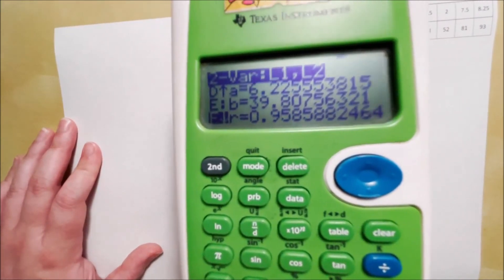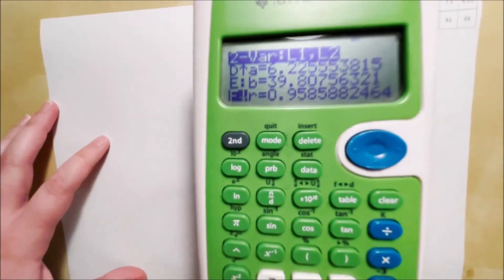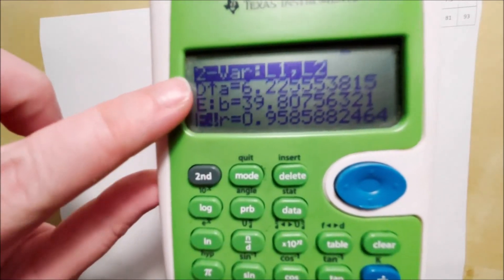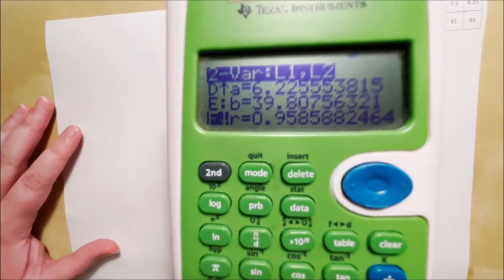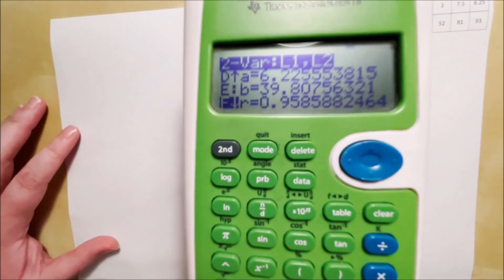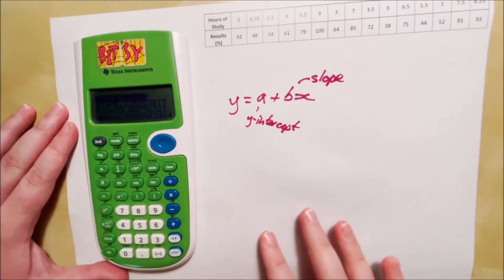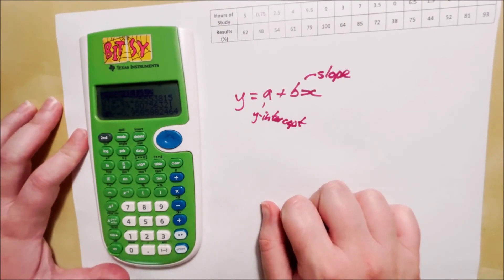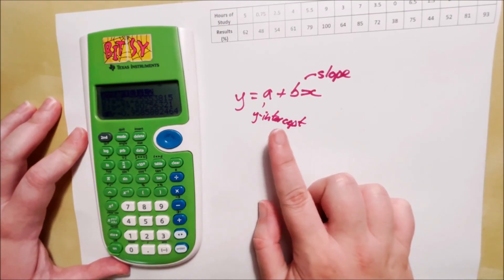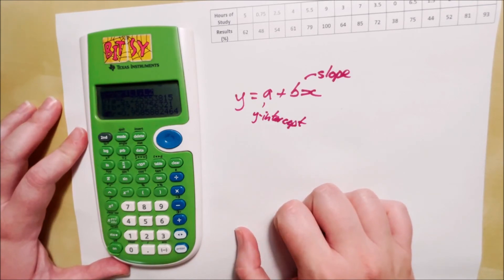Now, a and b, which are associated with this capital D and E here, are our slope and our y-intercept. However, you might notice that on our syllabus, this is how we write our equation of a linear function, a straight line, with a being the y-intercept and b being the slope.